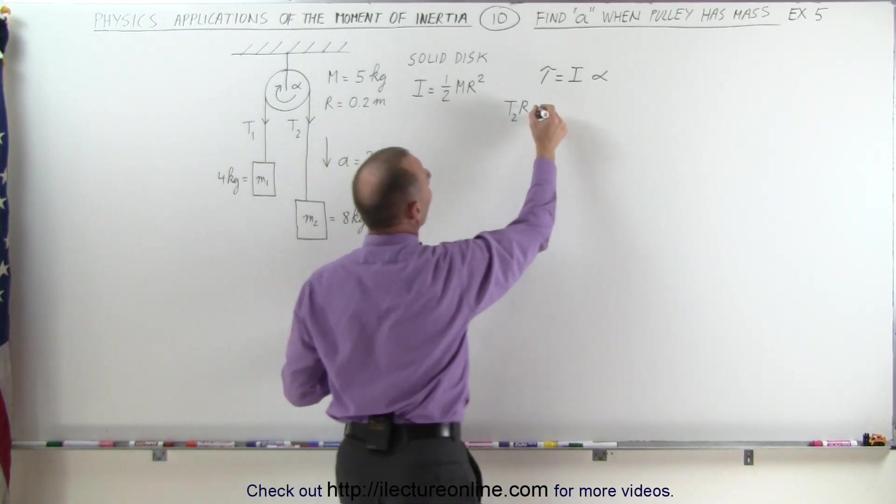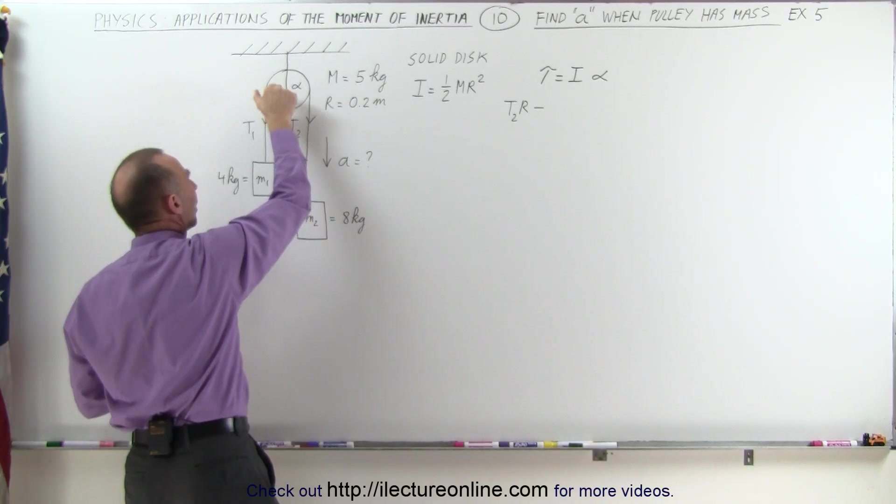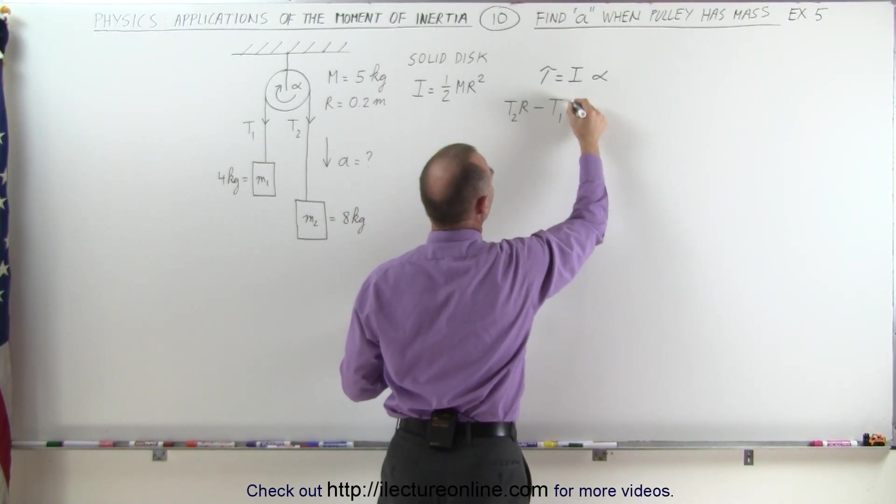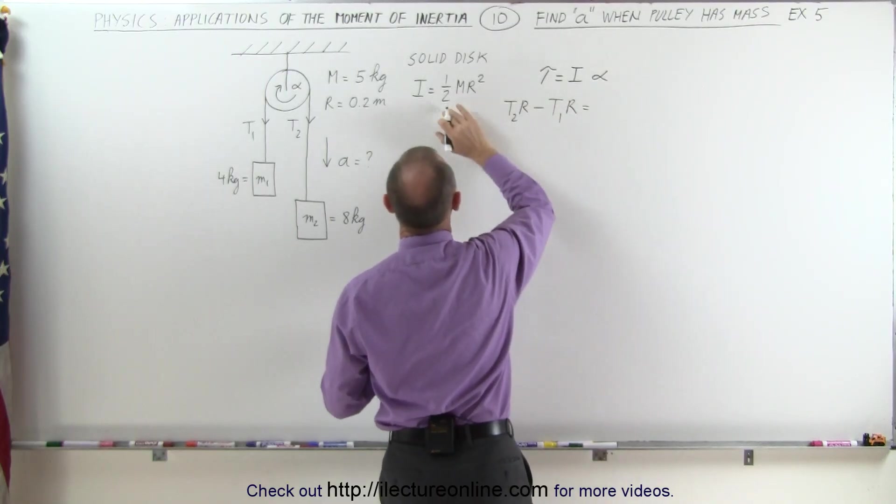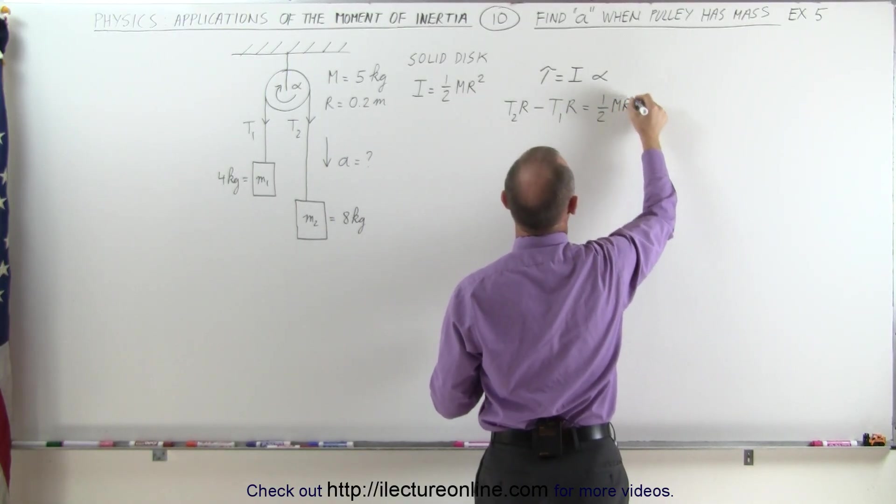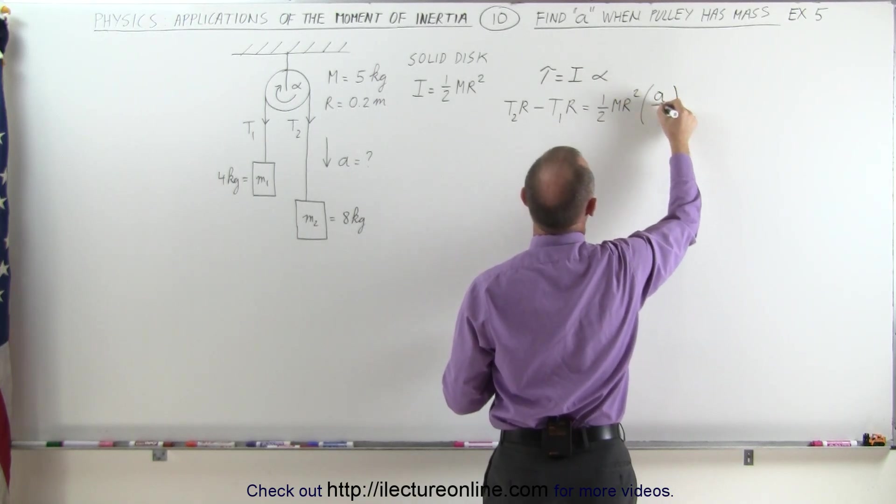And we subtract from that the torque which opposes the acceleration, which is caused by T1 times R. And that would then be T2R minus T1R equals the moment of inertia of the pulley. It's a solid disk, 1 half times the mass times the radius squared times the angular acceleration, which can be written as A divided by R.